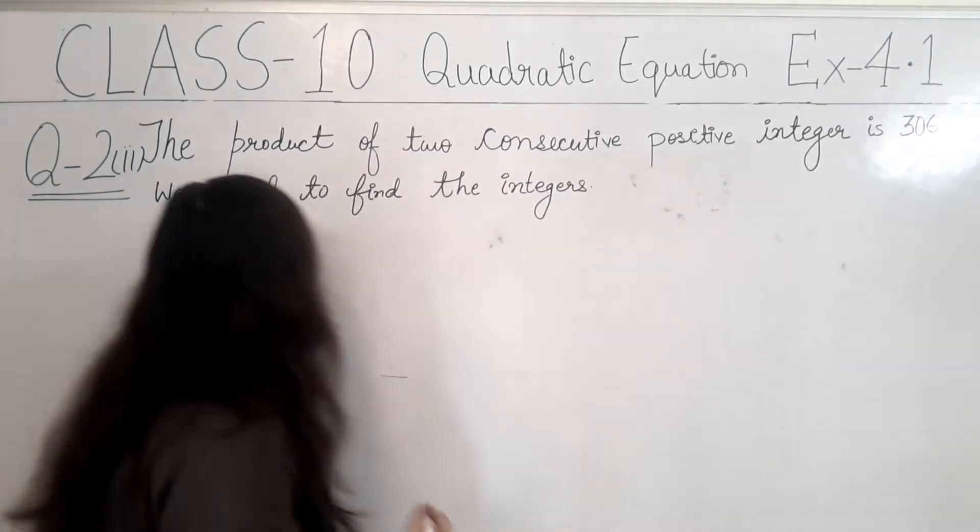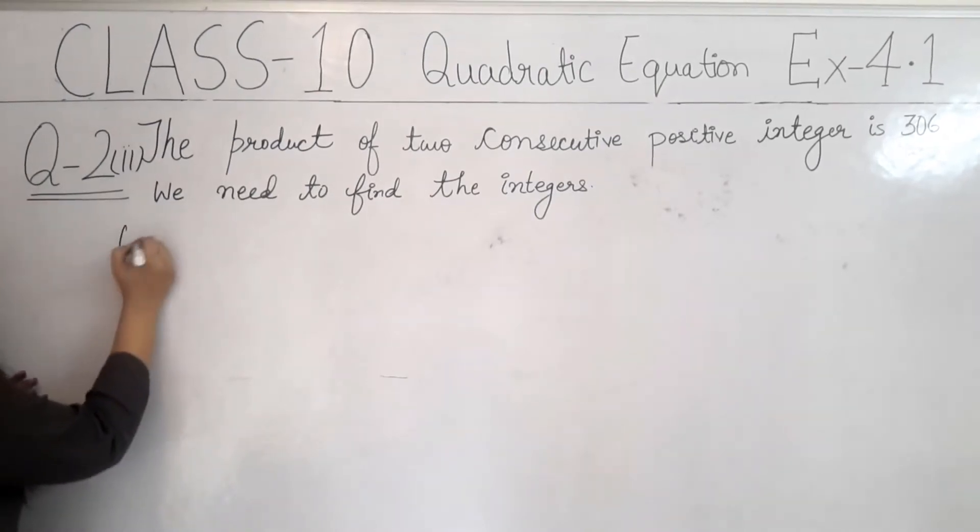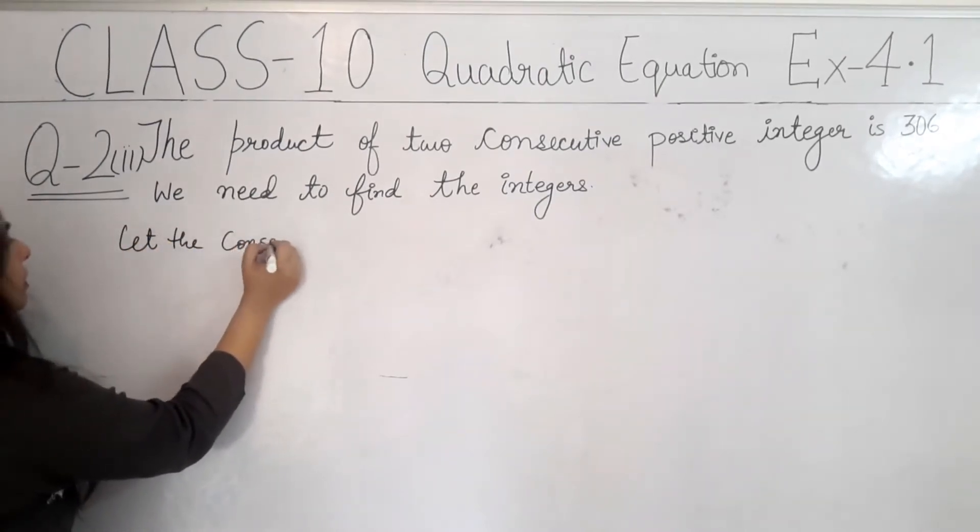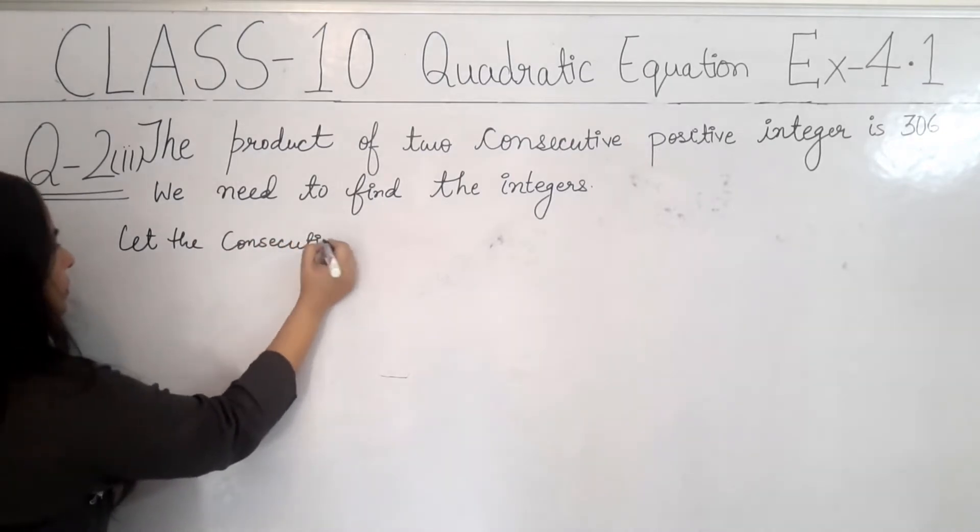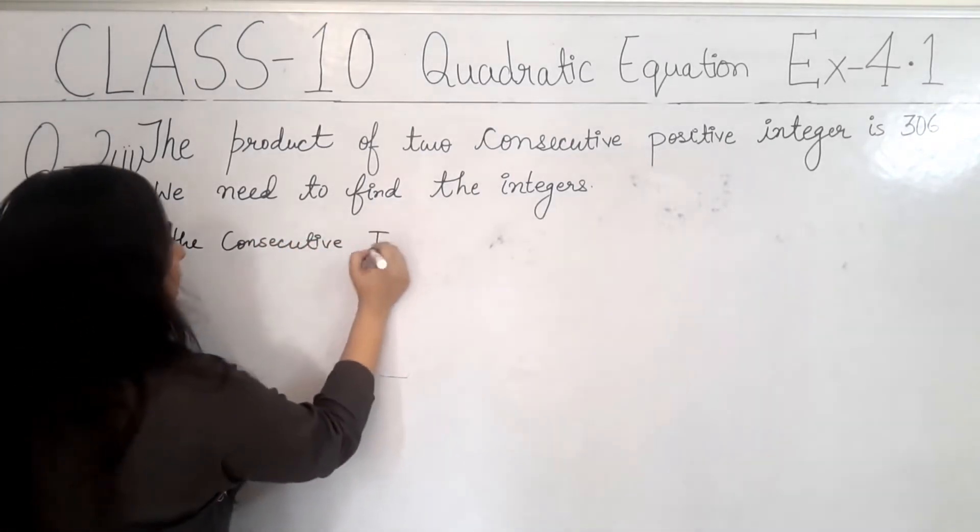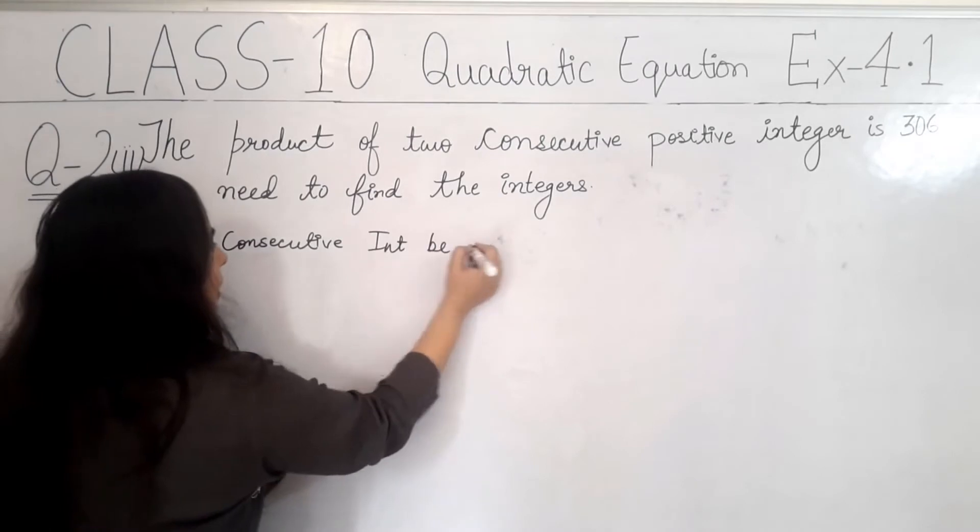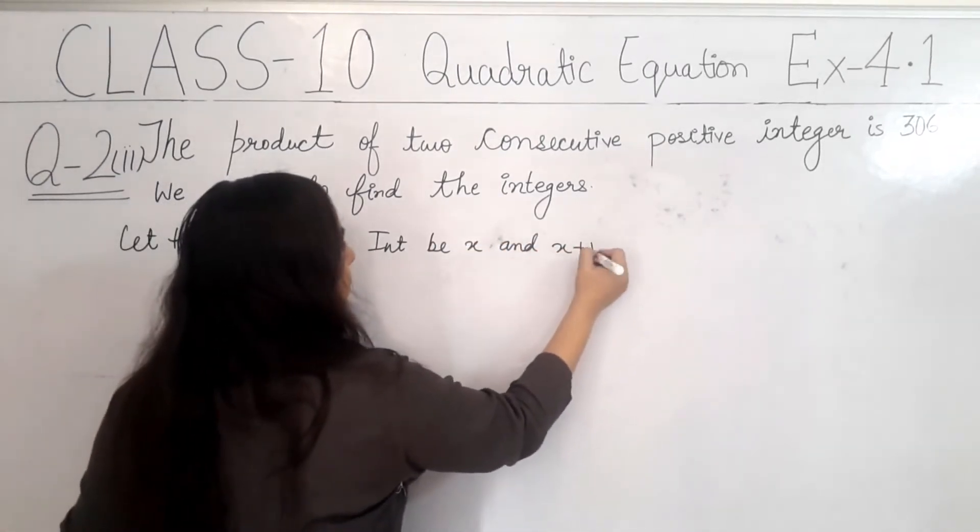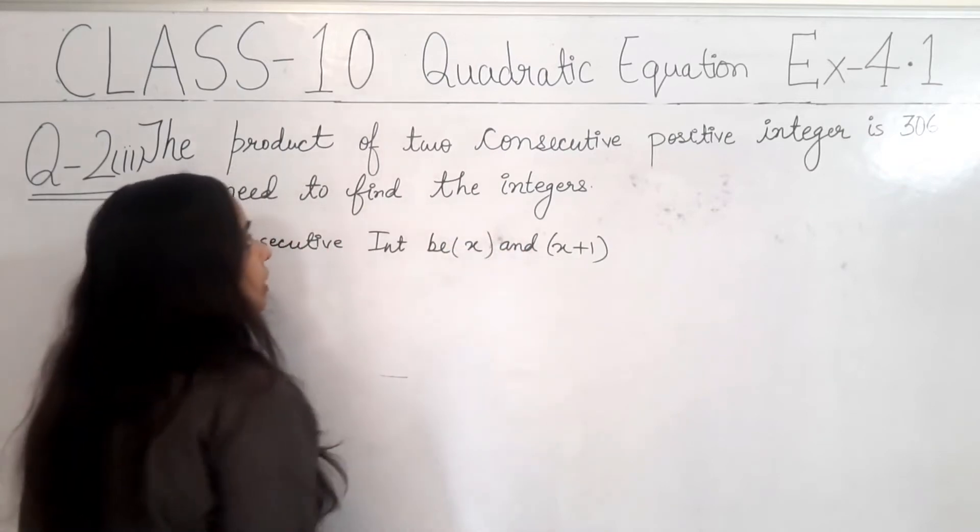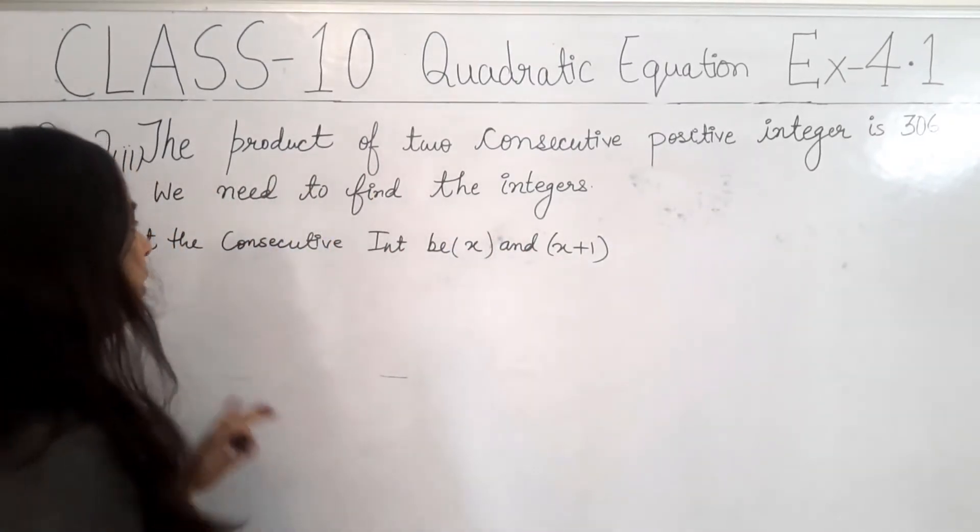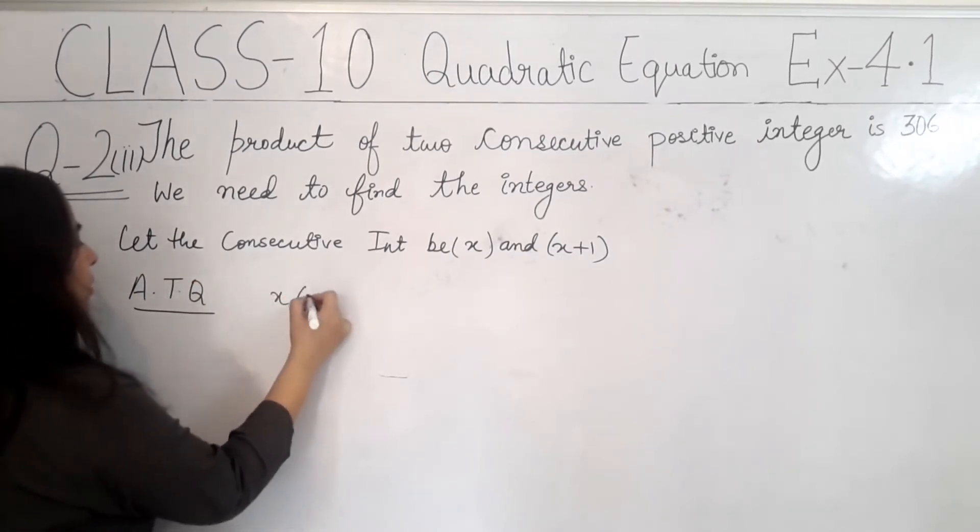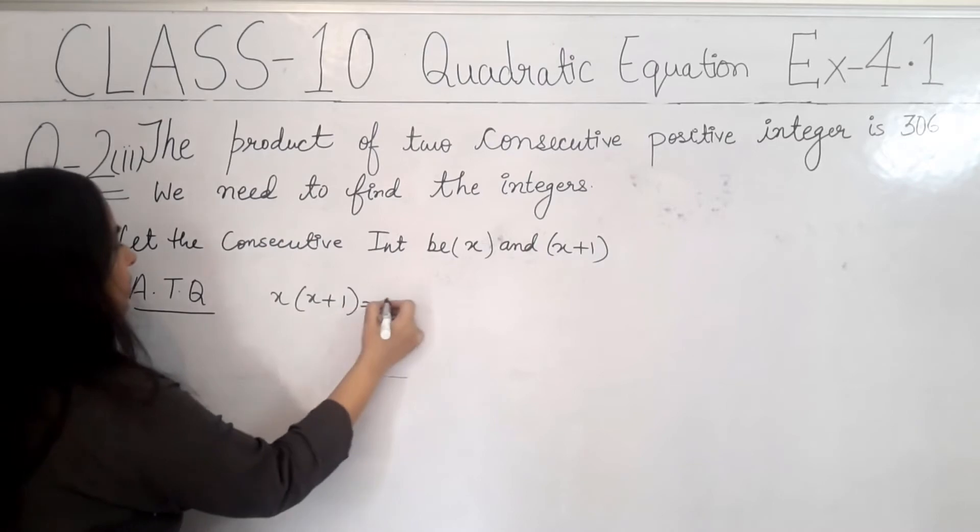x plus 1. So, first of all, let the consecutive integers be x and x plus 1. So, we have laid this. Now, let's see the next question. Product of consecutive integers. So, according to question, x into x plus 1 is equal to 306.